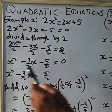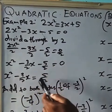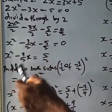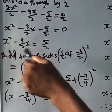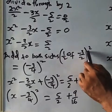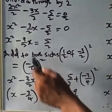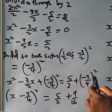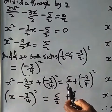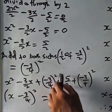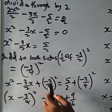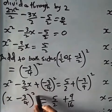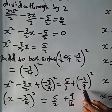Step 2: transfer the constant term. So x squared minus 3 over 2x equals plus 5 over 2. The coefficient of x is minus 3 over 2. Step 3: add to both sides the square of half of this coefficient — that is, half of minus 3 over 2 gives minus 3 over 4, all squared. Adding to both sides: x squared minus 3 over 2x plus (minus 3 over 4) squared equals 5 over 2 plus (minus 3 over 4) squared. This is also a perfect square, giving x minus 3 over 4, all squared.